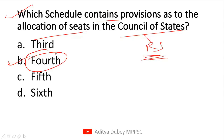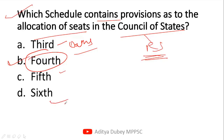If we talk about option A, which is the Third Schedule, the Third Schedule deals with oaths — means about taking oaths (shapath). If we talk about the Fifth Schedule, it deals with provisions for administration and control of Scheduled Areas and Scheduled Tribes.